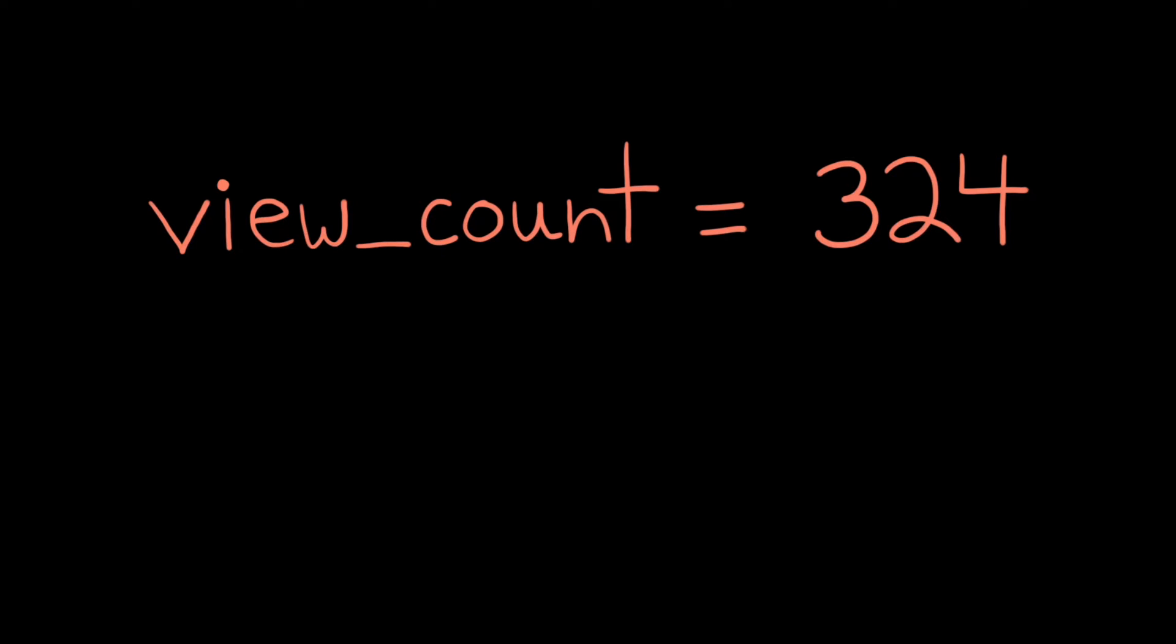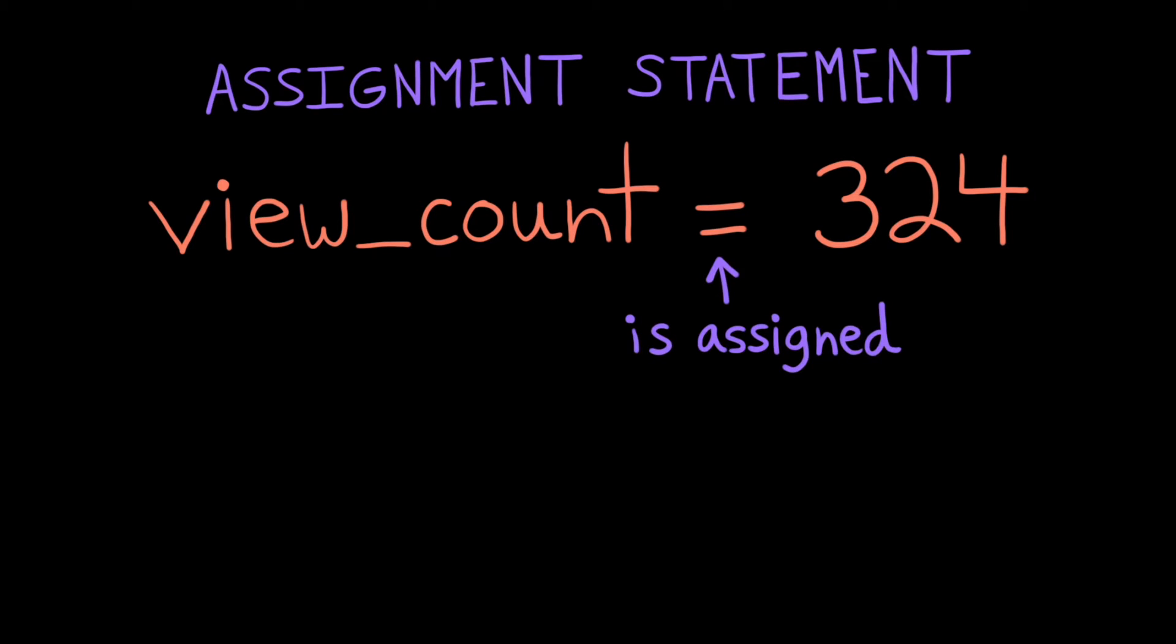To create a new variable, or update the value stored in an existing variable, we'll use an assignment statement. An assignment statement starts with the name of the variable on the left-hand side, then an equal sign, also called the assignment operator, and on the right-hand side, the value to be stored. We read this statement as, 'The variable view_count is assigned the value 324.'